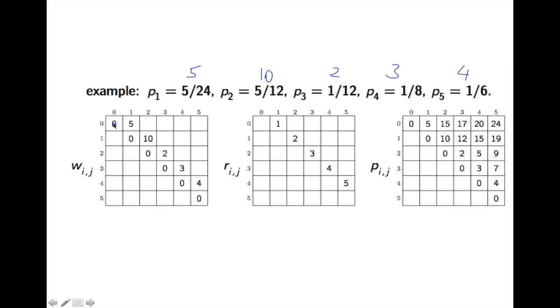So the first two, the first diagonals that we fill in our matrix for WIJ is the WII, which are all 0, and then the WII plus 1, which are 5, 10, 2, 3, 4, so 5, 10, 2, 3, 4. This matrix represents the nodes in the tree, so which node do we choose to use as the root.